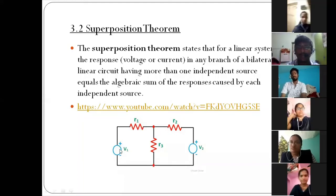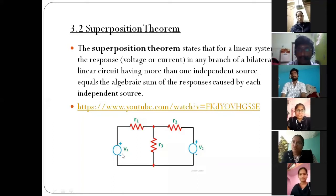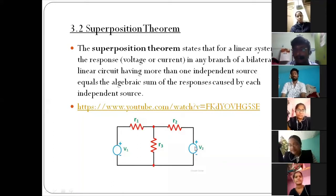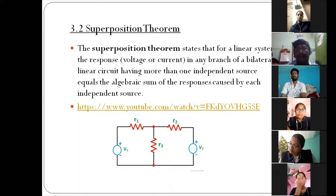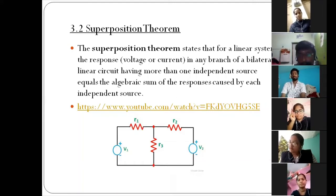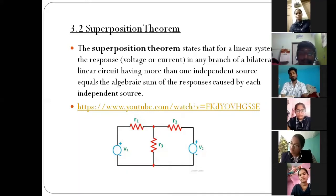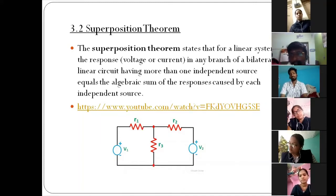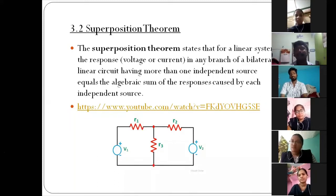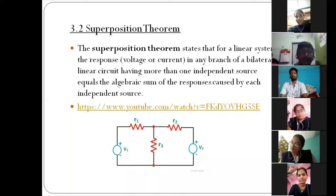In superposition theorem there are two sources. We find out the current I using each source separately. To find current due to V1, we short circuit V2 and calculate I1. To find current due to V2, we short circuit V1 and calculate I2. The total current is I1 plus I2.